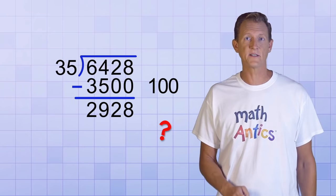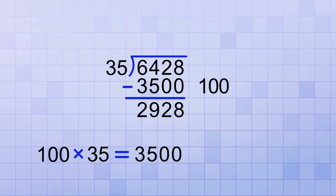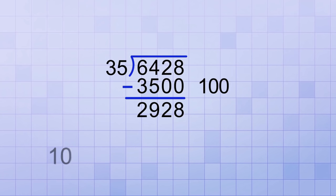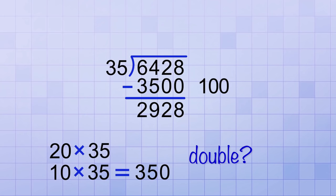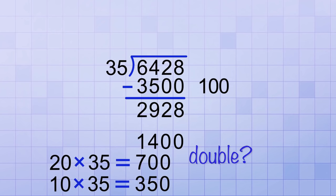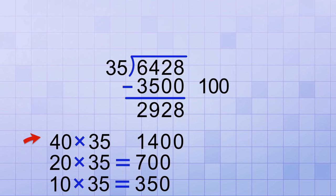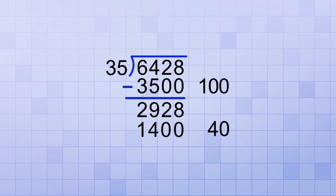That's a huge remainder compared to our divisor, but that's totally okay in the partial quotients method — it just means we have more partial answers to figure out. So what should our next estimate be? We can't do 100 again since 3,500 is greater than the remainder. 10 times 35 equals 350, but if we double that, 20 times 35 would be 700. Doubling again, 40 times 35 gives us 1,400, which is less than our remainder but close. So let's use 40 as our next partial answer. 40 times 35 equals 1,400, and 2,928 minus 1,400 equals 1,528.